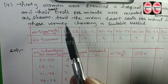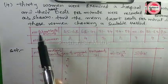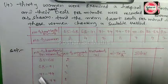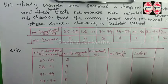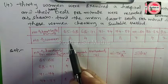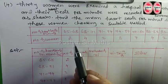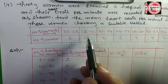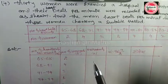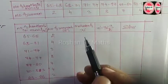For this we need to find the mean heartbeat per minute. Number of women, choose suitable method. The data: 2 women 65-68 heartbeats per minute, 4 women 68-71, 3 women as it is in the table.